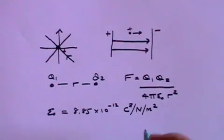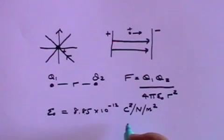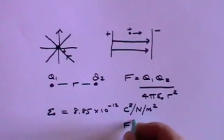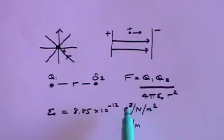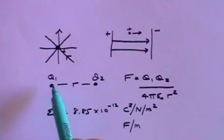You will also find epsilon naught described as 8.85 times 10 to the minus 12 farads per meter — the value is the same. You'll find that when we deal with capacitance in those videos. Essentially that unit is the same as the other unit. Now what is actually happening here?